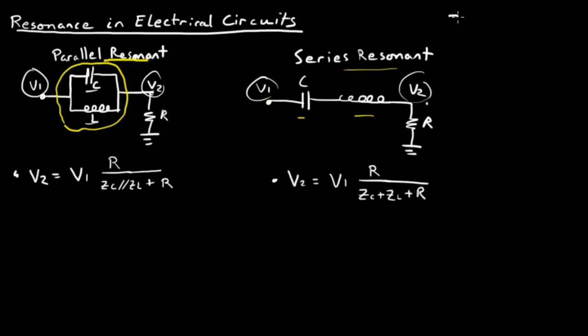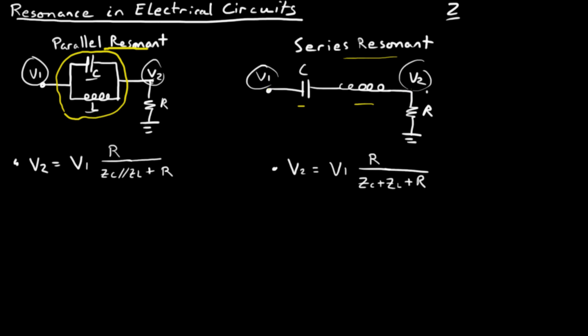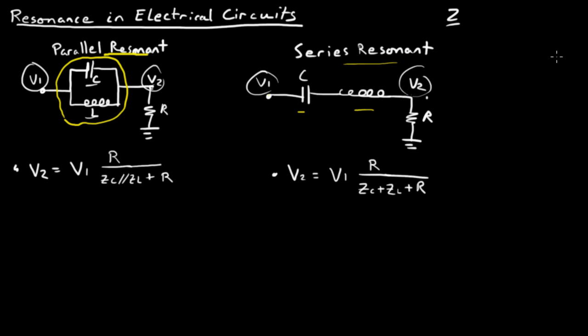And just as a reminder up here, the impedance of a capacitor is equal to 1 over j omega C, where omega is 2 pi times the frequency. And the impedance of an inductor is j omega L.